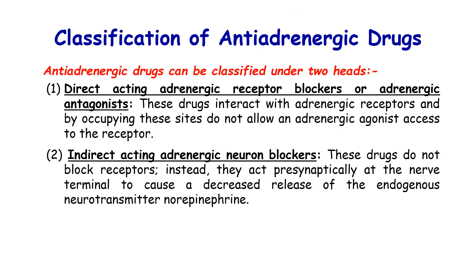Adrenergic drugs can be classified according to their mechanism of action. The first classification includes direct-acting adrenergic receptor blockers or adrenergic antagonists. These drugs interact directly with the adrenergic receptors — alpha-1, alpha-2, beta-1, and beta-2. By interacting with these receptors, they block and occupy the sites, and do not allow the adrenergic agonist from accessing that receptor.